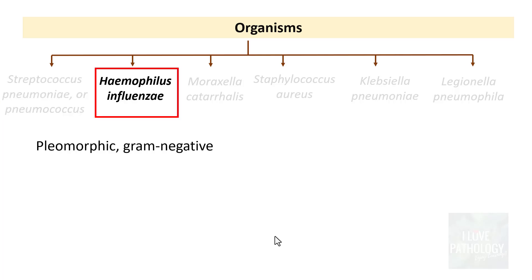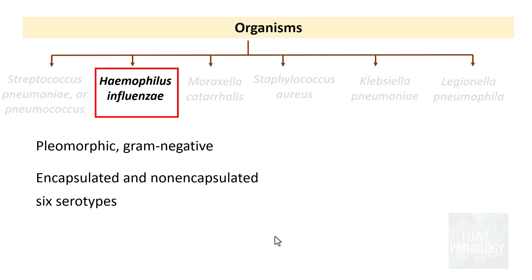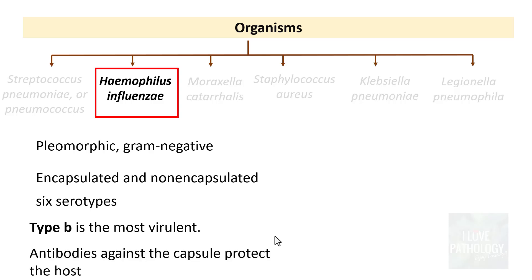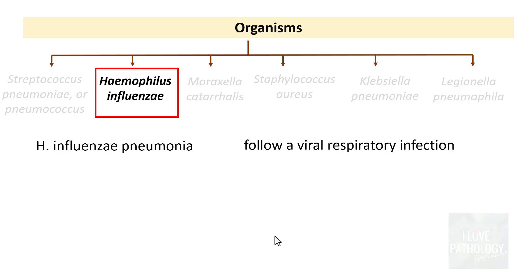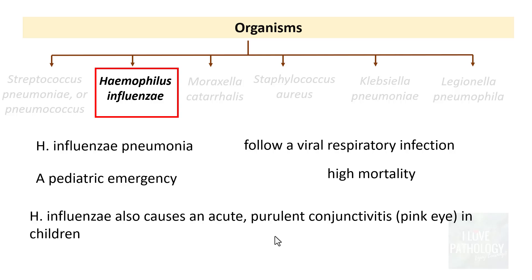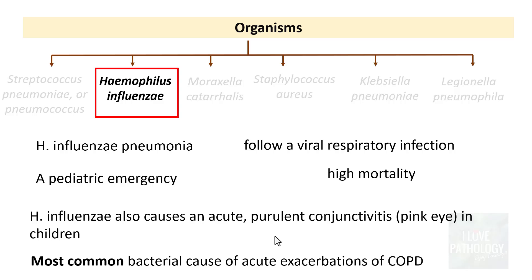The second organism is Haemophilus influenzae, a pleomorphic gram-negative bacilli. It can be encapsulated or non-encapsulated; the encapsulated type has six serotypes, of which type B is the most virulent. Vaccines against Haemophilus influenzae contain capsular polysaccharide type B antigen. Haemophilus influenzae pneumonia usually follows a viral respiratory infection, is a pediatric emergency with very high mortality, and is the most common bacterial cause of acute exacerbations of COPD in adults.